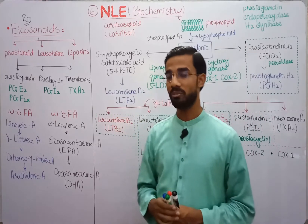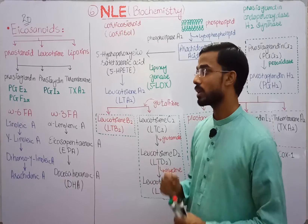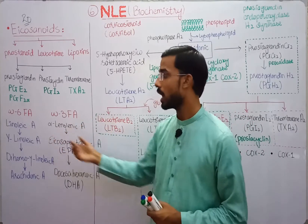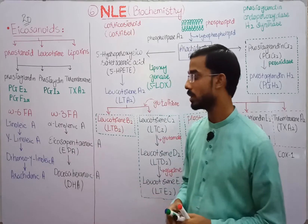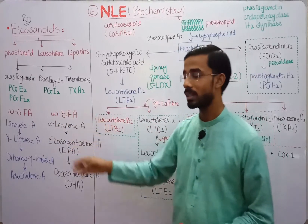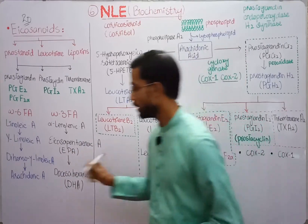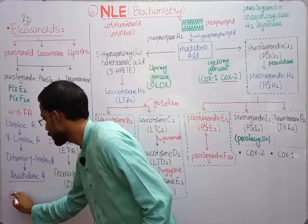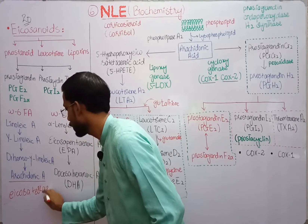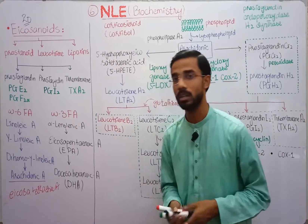Let's see the difference between Omega-6 fatty acids and Omega-3 fatty acids. Omega-6 fatty acids include Linoleic acid, Gamma-Linolenic acid, Dihomo-Gamma-Linolenic acid, and Arachidonic acid. This is the sequence along which Linoleic acid ultimately forms into Arachidonic acid. Arachidonic acid is basically called Eicosatetraenoic acid.